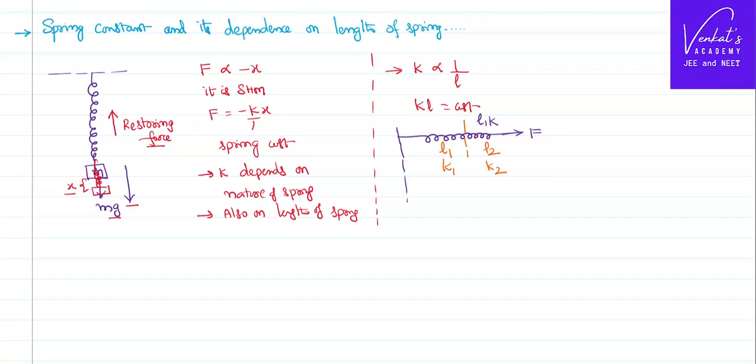Now what happens is, as I told earlier, total spring constant K and total length L can be written like K1*L1, or that is also equal to K2*L2. In the place of that K*L, I can even write L1 plus L2 equal to K1*L1, that is equal to K2*L2.